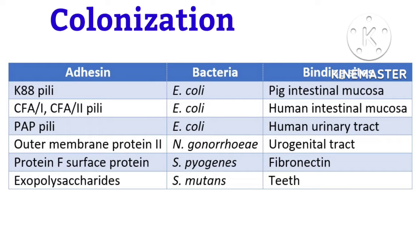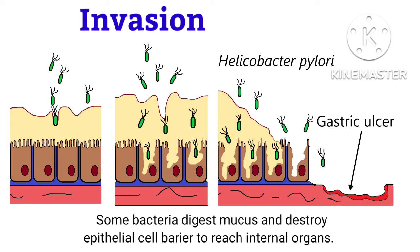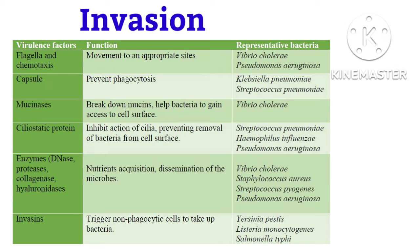Flagella and pili in some bacteria help specifically bind onto the host cell surface. Neisseria gonorrhoeae uses specific outer membrane proteins for attachment so it is not washed out with urine. Staphylococcus mutans uses slimy exopolysaccharide for the formation of dental plaque. Some pathogens cause disease while remaining on the mucosal surface, but many others breach anatomic barriers to reach nutrient-rich tissues, like Shigella, Listeria, and Salmonella. Vibrio possesses mucinase enzymes that break down mucus to gain access to the cell surface.